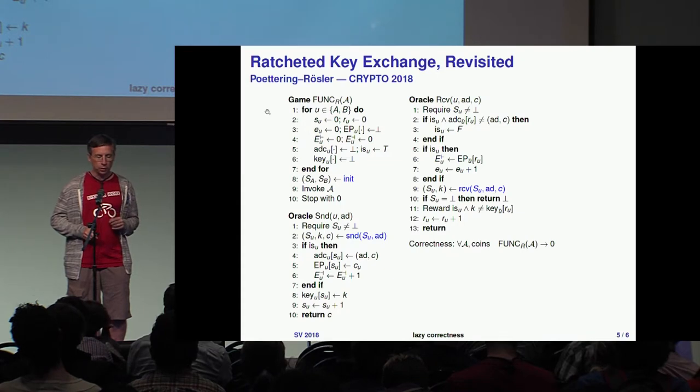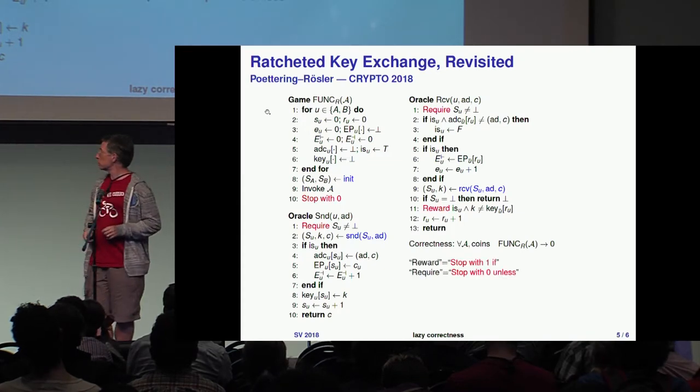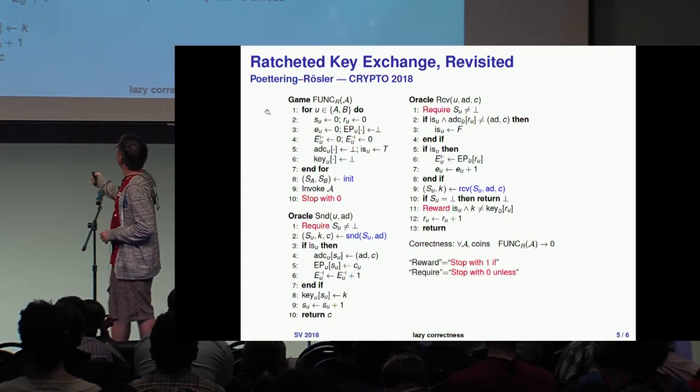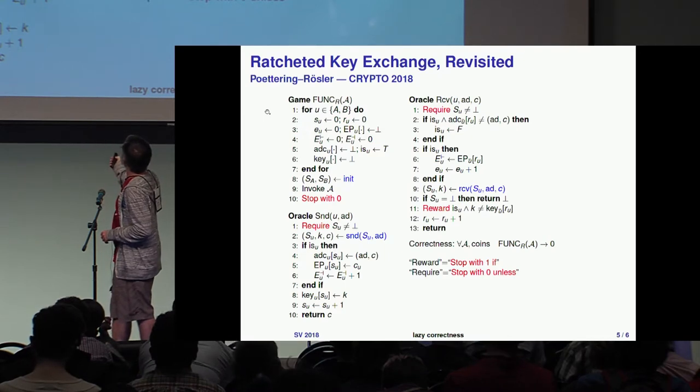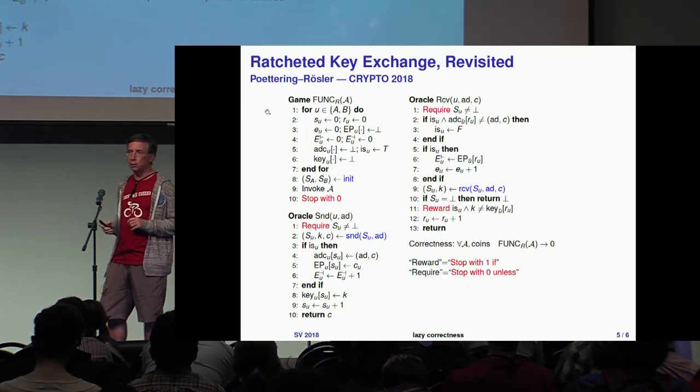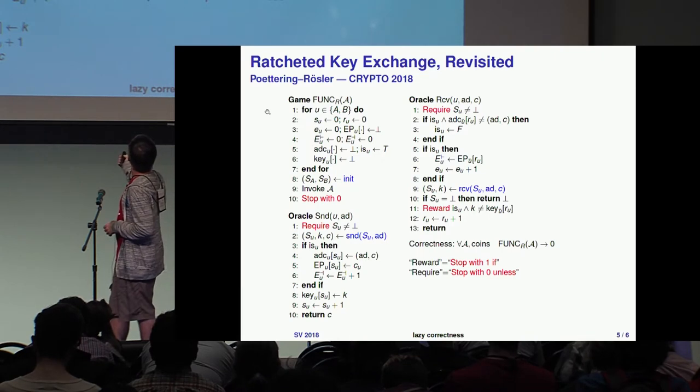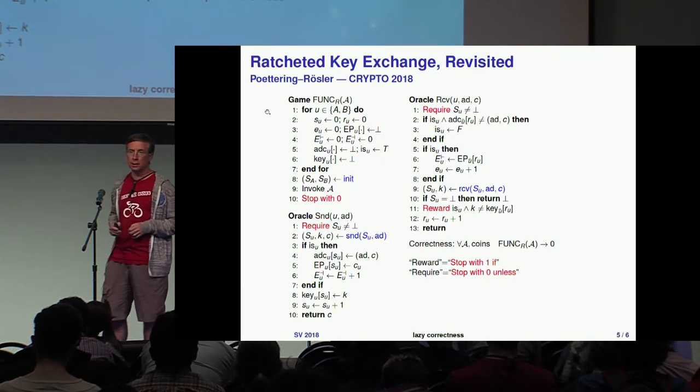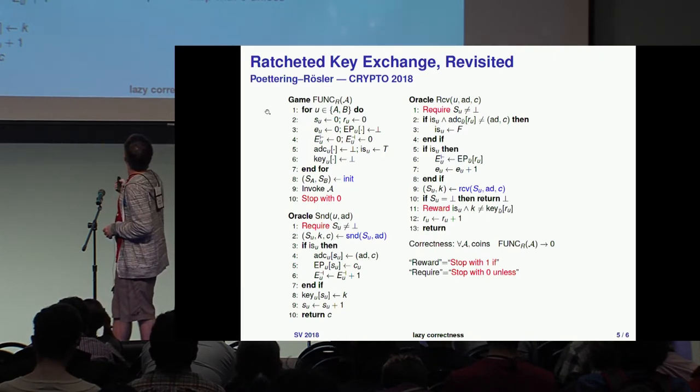Where is the output in this game? You can see there's a stop with zero here. There's require, which is a shorthand for stop with zero unless this predicate is true. And there is a shorthand for stop with one if the predicate is true.